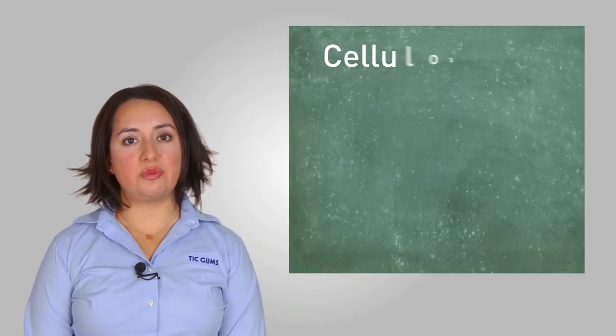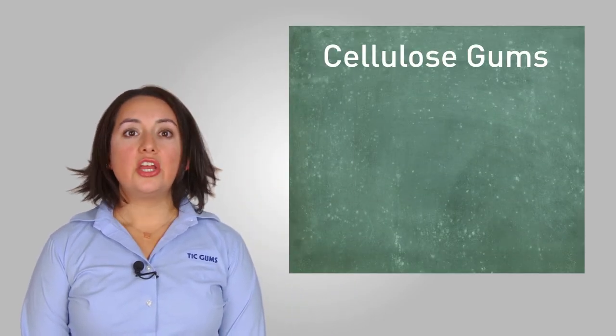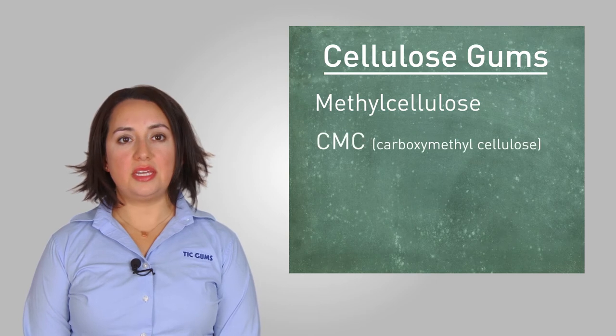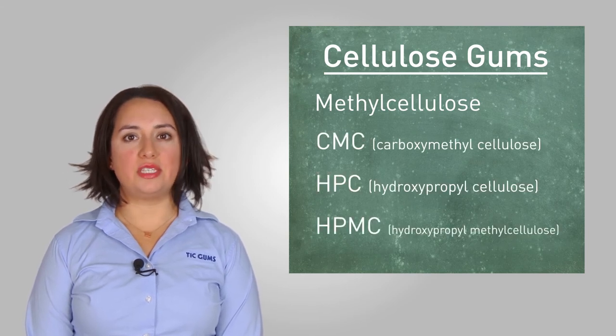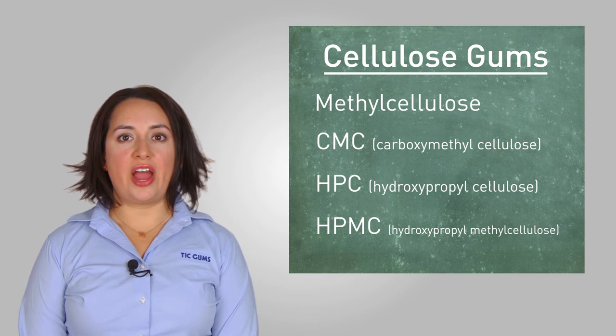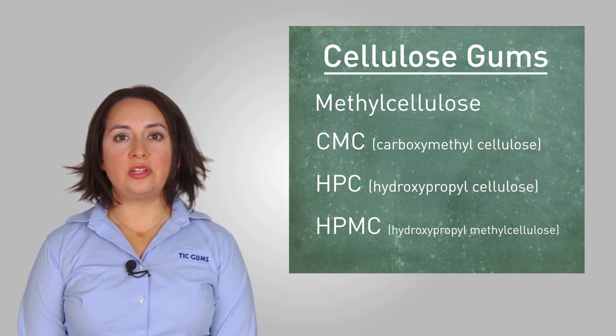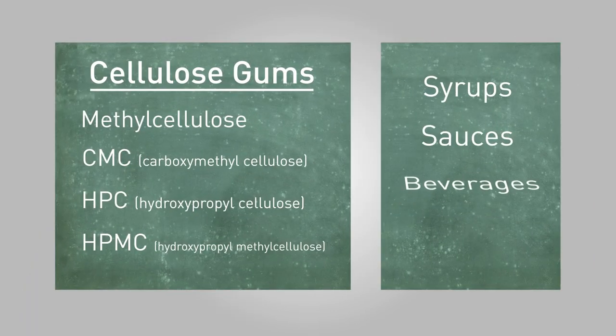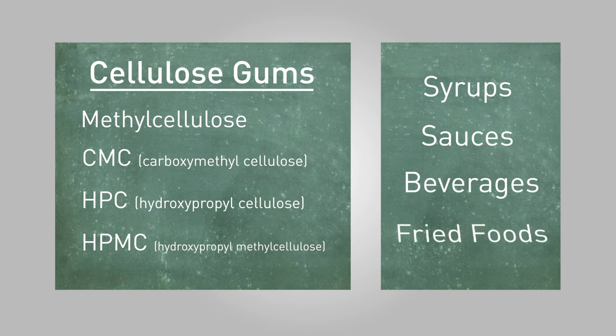The unique thing about cellulose gum is not only its variety of uses, but the different forms of cellulose gum that can be obtained through adjustments in the extraction process. You can create products like methylcellulose, CMC, HPC, or HPMC, each with their own benefits. This allows manufacturers to use cellulose gum in a wide range of applications like syrups, sauces, beverages, and even fried foods.